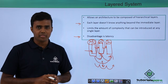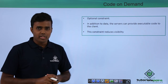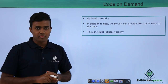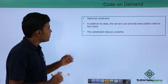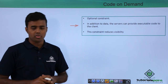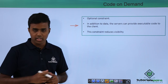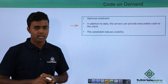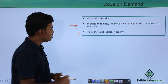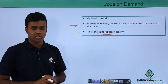The last constraint is the code-on-demand constraint, and it is the only optional one among the six. Usually a client downloads data from the web API, but the code-on-demand constraint says that servers can also provide executable code — such as JavaScript or applets — to the client, which can then download and execute it on the client side. However, since it involves transmission of executable code, it poses severe security threats and reduces visibility, which is why this constraint is not enforced and remains optional.